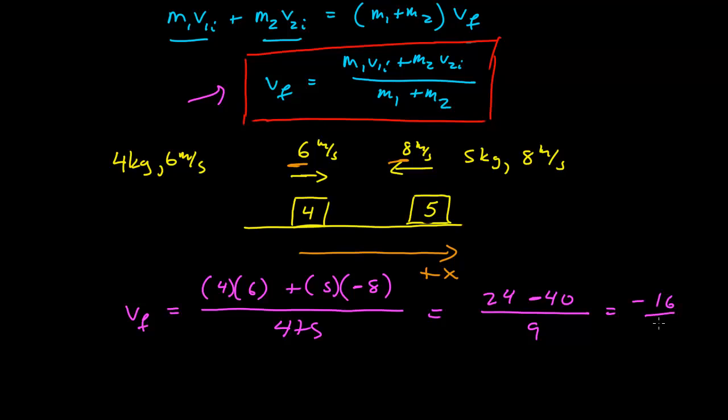minus eight times five is 40 over nine. It looks like negative 16 ninths. That is about negative 1.78 meters per second. Does this make sense?